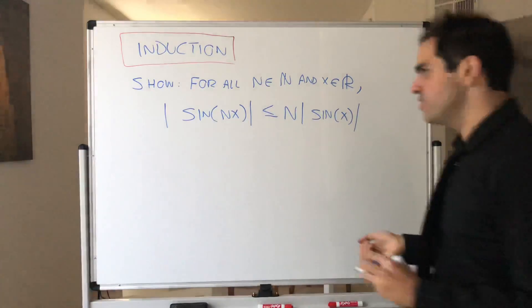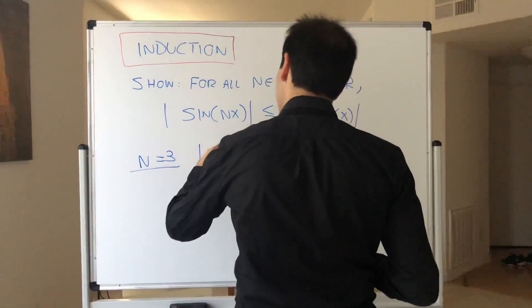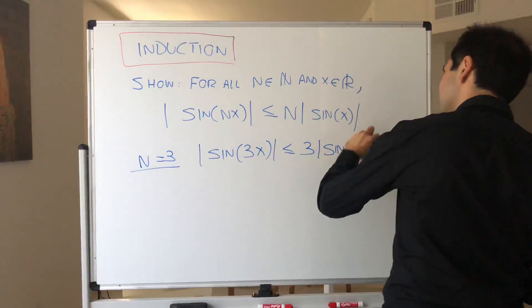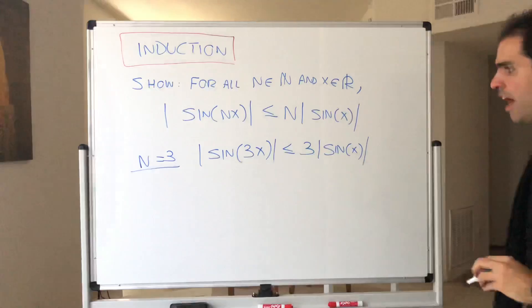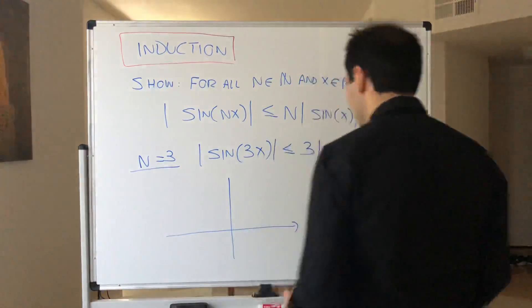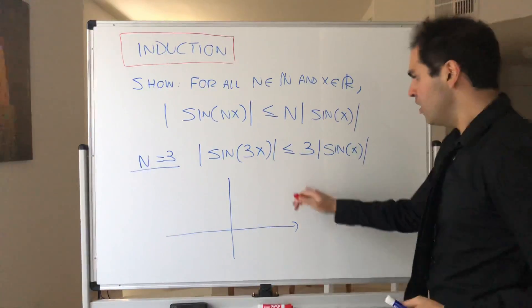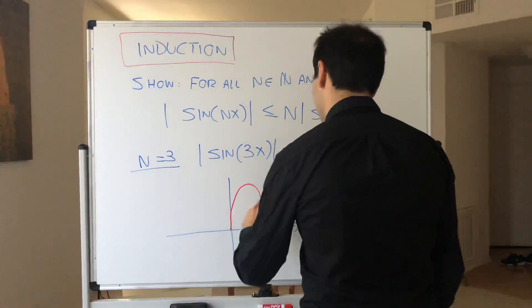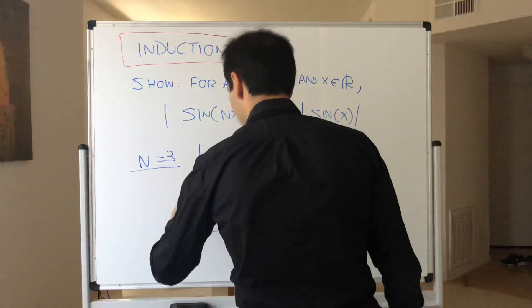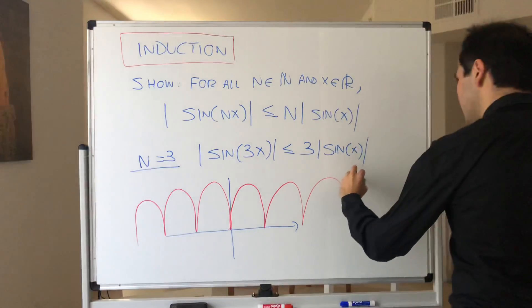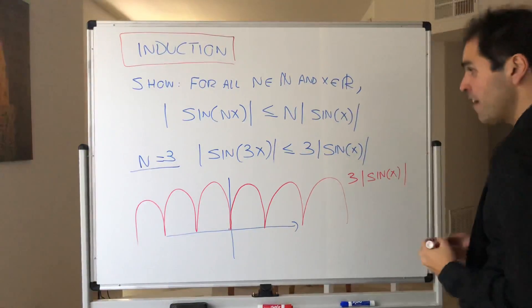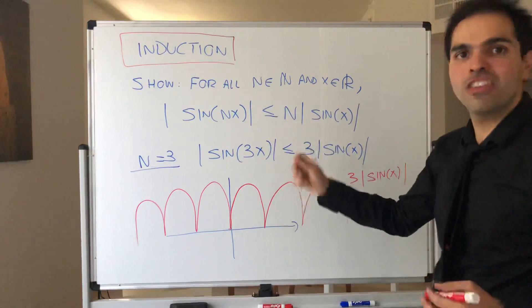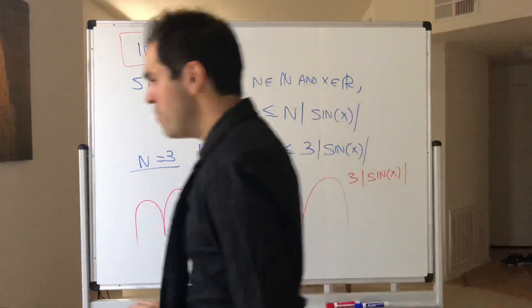Just to illustrate, for instance, the case n equals 3: what this is telling you is that absolute value of sine of 3x is less than or equal to 3 times absolute value of sine of x. And it turns out if you plot those functions, at least it looks true. Because 3 times absolute value of sine of x looks like a huge bump that has zeros at multiples of pi, so at pi·n, just jumping up and down.